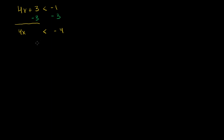Now let's divide both sides of this equation by 4. When you multiply or divide both sides of an inequality by a positive number, it doesn't change the inequality. So the left-hand side is just x, and x is less than negative 4 divided by 4, which is negative 1.